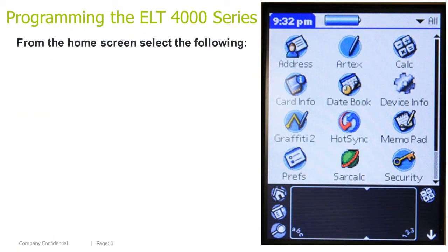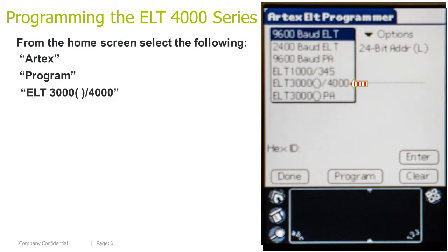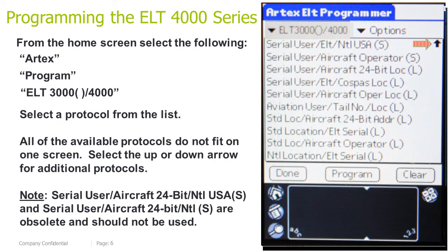Programming the ELT 4000 series: on the home screen, select ARTEX > Program > ELT 3000/4000. Select a protocol from the list. All available protocols do not fit on one screen; select the up or down arrow for additional protocols. Note: Serial User Aircraft 24-bit address National USA short and Serial User Aircraft 24-bit address National short are obsolete and should not be used.